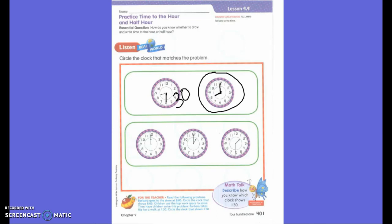Let's go to the next green circle. And now we have 3 clocks. Barbara takes Rhea for a walk at 1:30. Circle the clock that shows 1:30. Which clock did you circle? That's the one right here. The one on the very right. Why?